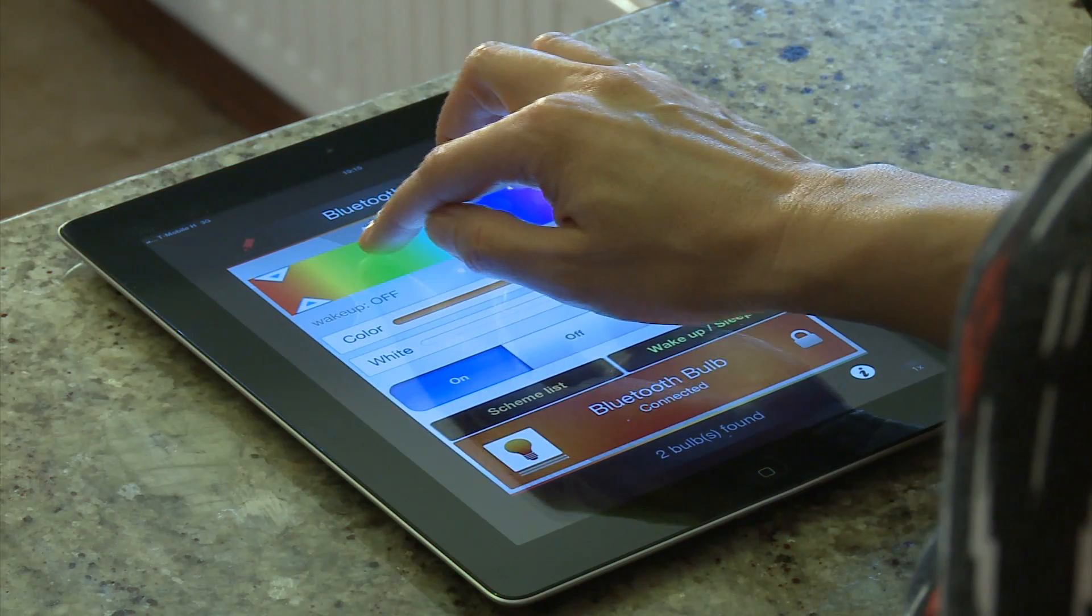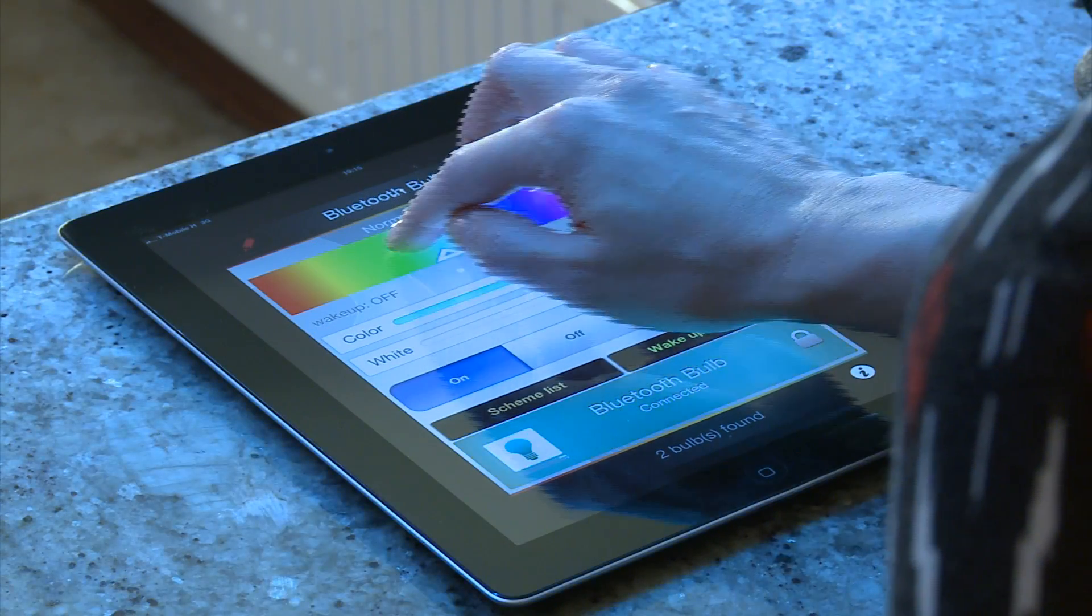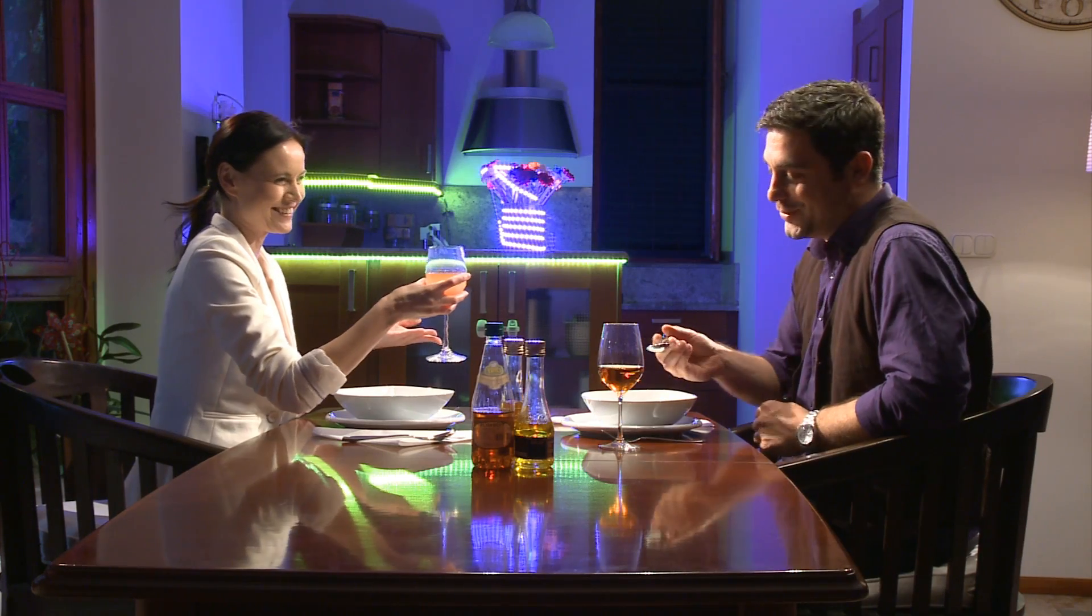With the intelligent lighting, you can vary the color of the light. You can dim it. You can even make them flash. And of course, you can switch them on and off remotely.